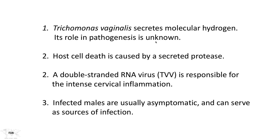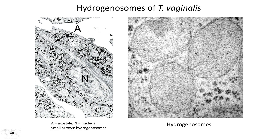Hydrogen itself does not induce pathology on its own. The organism also secretes proteases, which result in host cell death. The virus increases intense inflammation, which may recruit more cells to the area — possibly to the advantage of the parasite. Infected males are asymptomatic and serve as the source of infection. The electron micrograph shows the hydrogenosomes, which contain not only the enzymes necessary for producing molecular hydrogen but also most enzymes for anaerobic metabolism. Research on Trichomonas therefore requires an anaerobic environment.